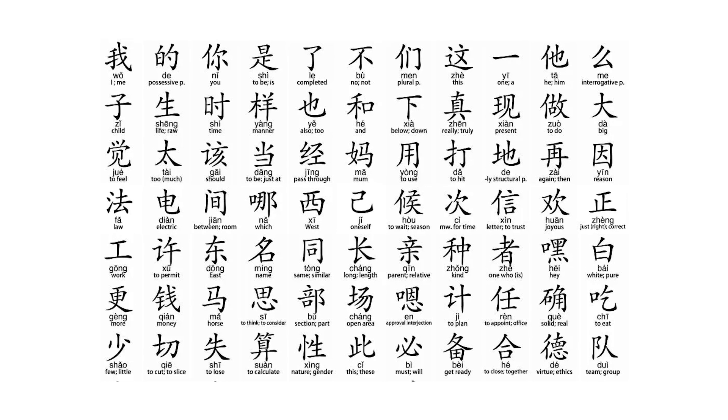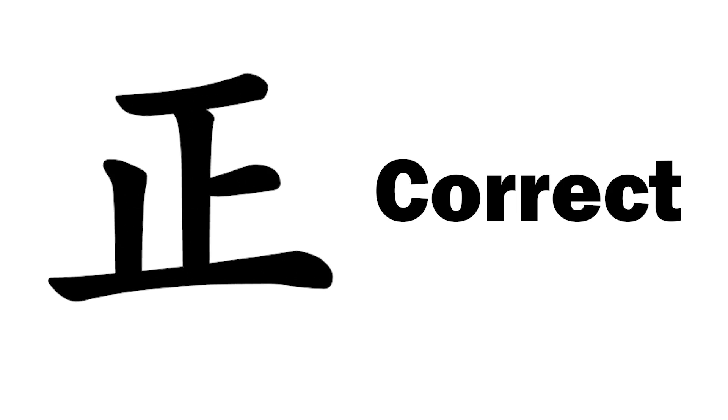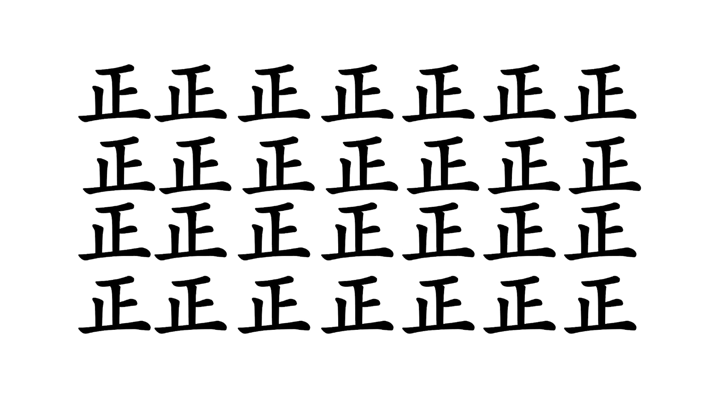But cultures using Chinese characters don't use this sort of tally. Instead, they use this character, which when not used as a tally, means correct. The character also has 5 strokes, similar to the tally marks we covered before, which again makes it easier to group and count.